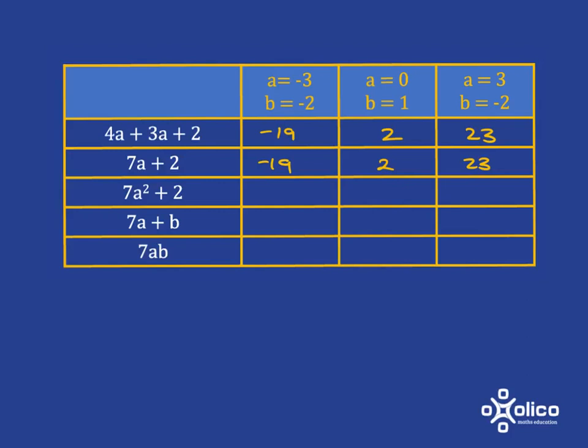And for 7a squared plus 2, I have to take 7 and then I've got to take negative 3 and square it. Negative 3 squared is negative 3 times negative 3, which is 9. 9 times 7 is 63 plus 2 gives me 65. And again, we'll work out the other two in a similar way. And there are the answers.